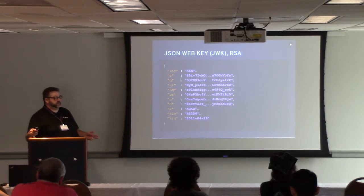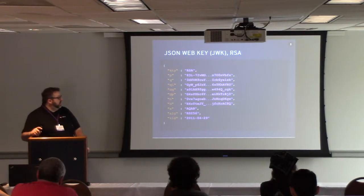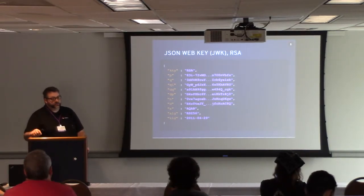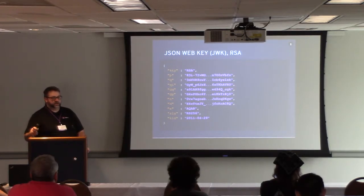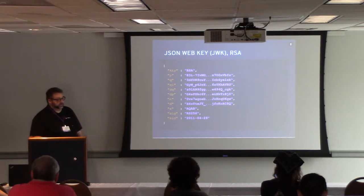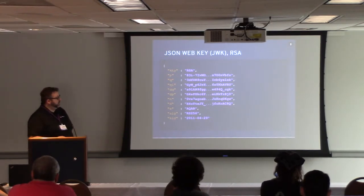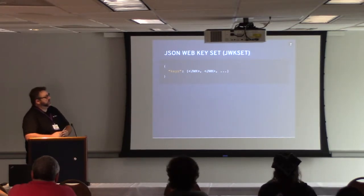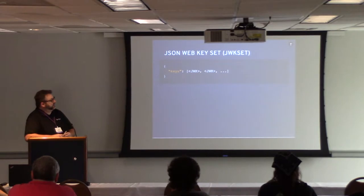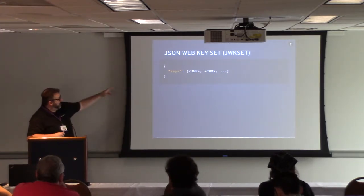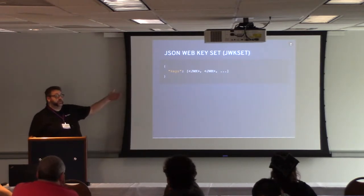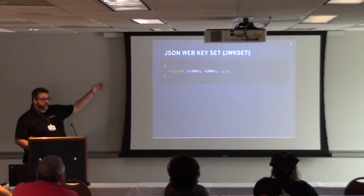Those are the three main key types used in the Josie crypto system. There's actually another one that has just recently been standardized: the CFRG curves, so things like ED25519 and ED448 have both recently been standardized as key types as well. Josie also standardizes a way to represent sets of keys, which is something we don't see in pretty much any other crypto system. You can define a bundle with a 'keys' parameter that is simply an array of keys, with extra parameters you can add.